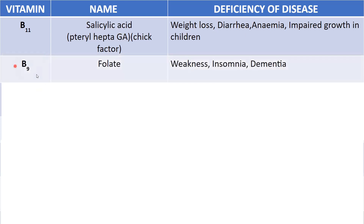Next is vitamin B9, called folate. It is involved in the production of new cells like WBCs and RBCs, and also prevents changes in DNA. Folate's derivative is called tetrahydrofolate. A deficiency in folate causes weakness, insomnia, and dementia.